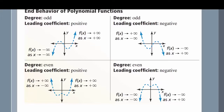When our exponent is odd and our leading coefficient is negative: as x approaches negative infinity, f of x approaches positive infinity, and as x approaches positive infinity, f of x approaches negative infinity. When our leading coefficient is positive and our exponent is even, then as x approaches negative infinity, f of x approaches positive infinity.